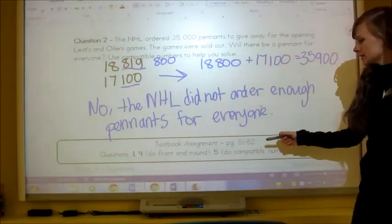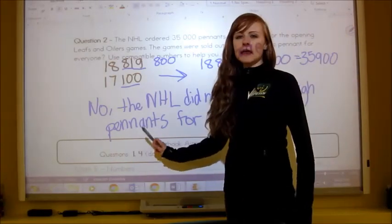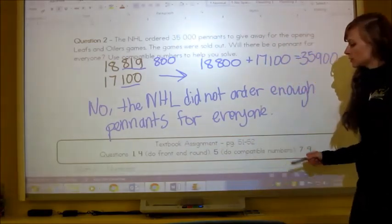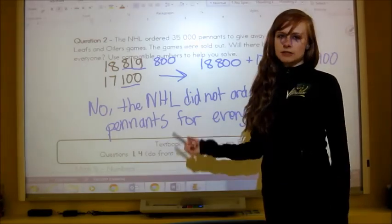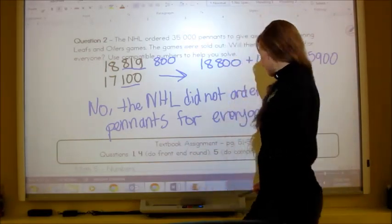Your textbook assignments on page 51 to 52. You're going to do question one. And then for question four, you're going to do front end rounding. And then for question five, you're going to do compatible numbers. And then there's seven and nine. Make sure you pay attention to that on this sheet because it doesn't say that in the textbook for the four and five.